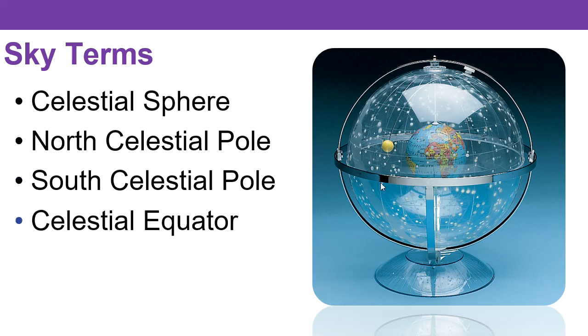The projection of the Earth's equator out to the celestial sphere represented by this metal ring, the celestial equator.